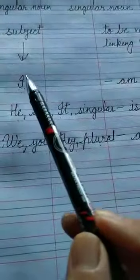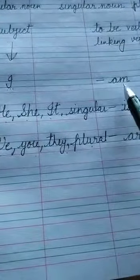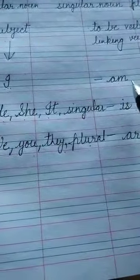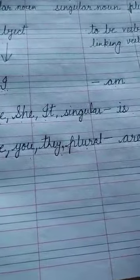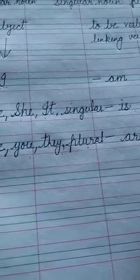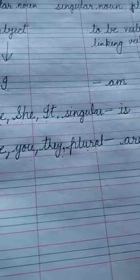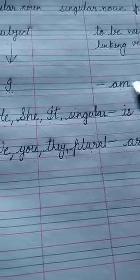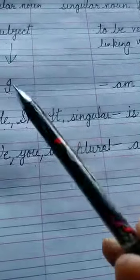AM is used with I. For example: I am a girl. I am a boy. I am Sita. I am Gita. Always with I, we use AM.